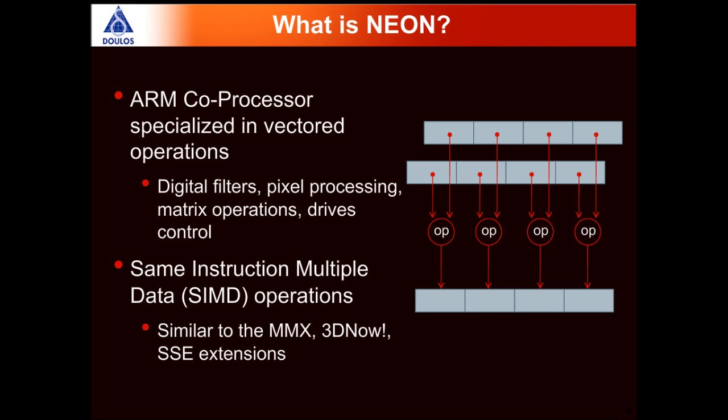Neon is an ARM co-processor specialized in vector operations. Its range of applications includes digital filters, pixel processing, matrix operations, and drive controls. It is essentially based on SIMD operations — same instruction, multiple data.